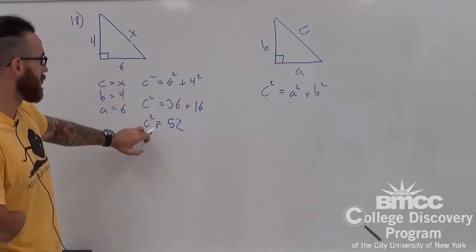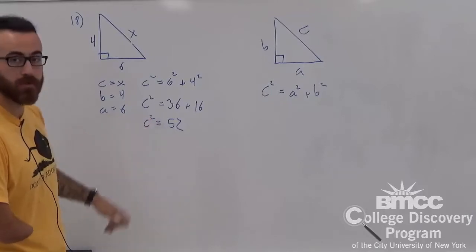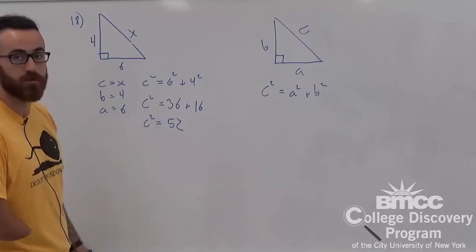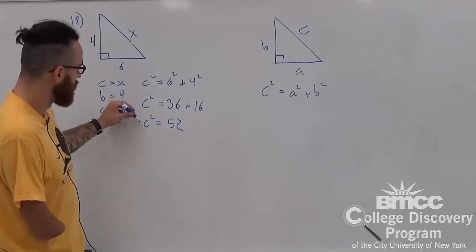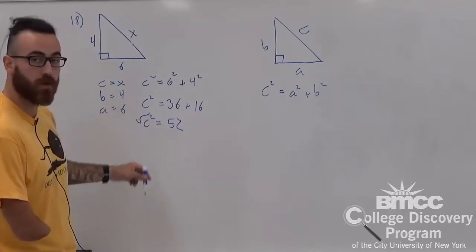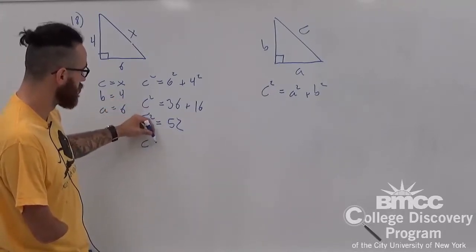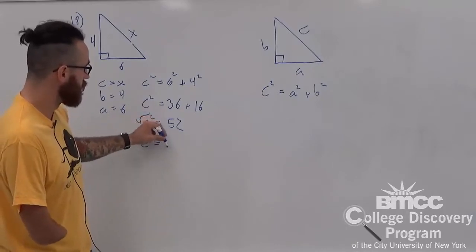Now, we need to get c to not be to the second power. To do that, we're going to take the square root of both sides. Take the square root of c squared, that's equal to c. Take the square root of 52.